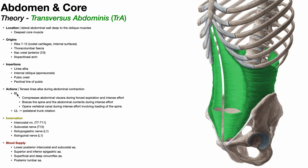For bilateral contraction — this is what's important clinically. When contracted bilaterally, this muscle compresses the abdominal viscera during forced expiration and intense effort like exercise, just like any of the core muscles do. It also braces the spine and abdominal contents during intense effort, especially with lifting. So if someone is lifting a heavy box with poor mechanics and a weak core, they're likely to hurt their back and develop a hernia. This muscle especially braces the abdominal viscera because it's closest to the viscera.